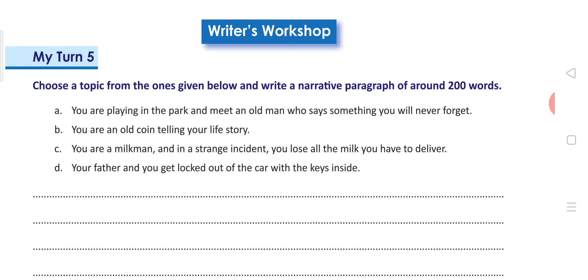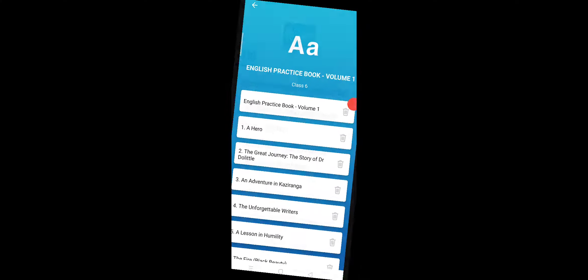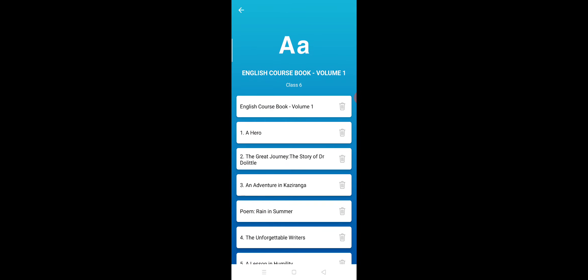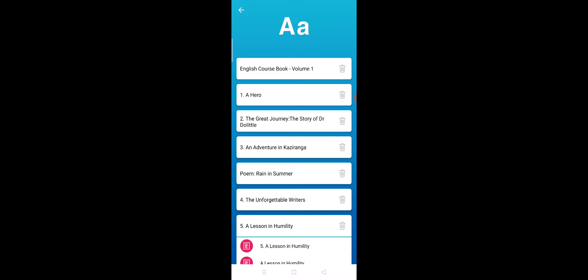Now, writer's workshop. You have to write a narrative paragraph. A narrative paragraph is used to describe an event that you have seen or observed. Topics to choose from: you are playing in the park and meet an old man who says something you will never forget; you are an old coin telling your life story; you are a milkman or a string instructor. We will take the narrative paragraph in the other part of the video. That's all in this video. Thanks for listening.